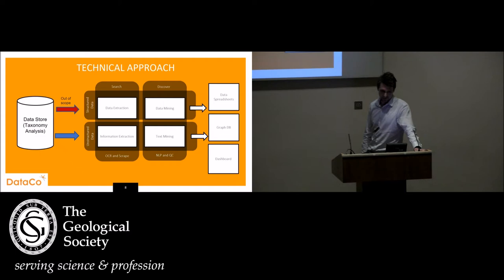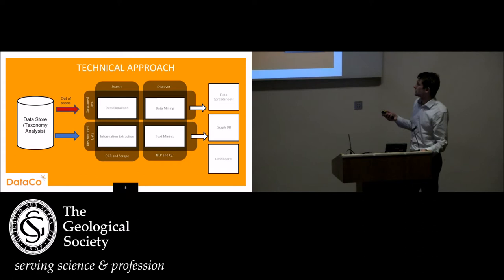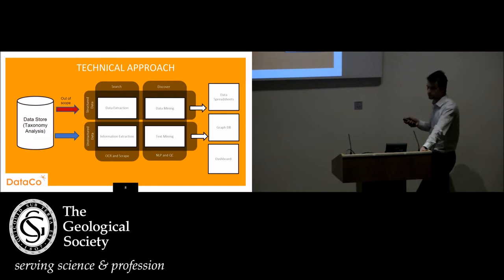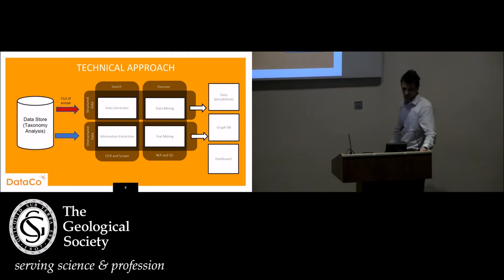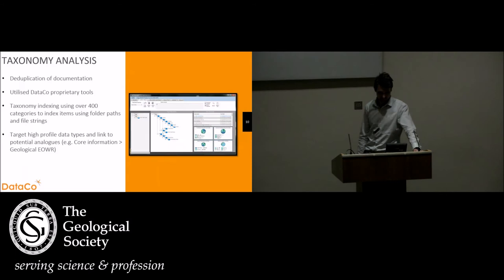So our technical approach: we basically took the taxonomy information and fed it into the matrix here. Structured data was out of scope coming straight from the data store, but what we wanted to do was take information, extract that from here, use this information to tell us whether there is data residing within a document. And if it is, can we mine that information and then put it out to a spreadsheet? If it's information that we find within the document, could we mine that text and then could we dashboard it or could we use graph database to look at relationships within there? So first we'll look at the taxonomy.